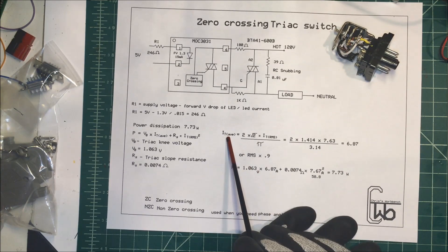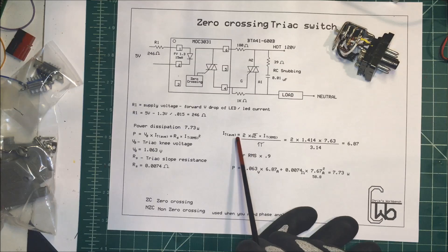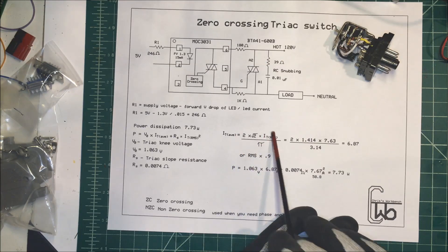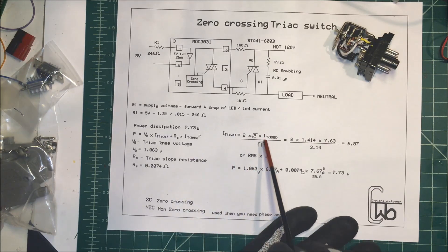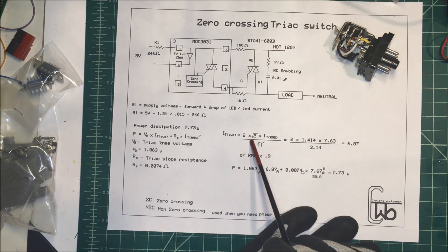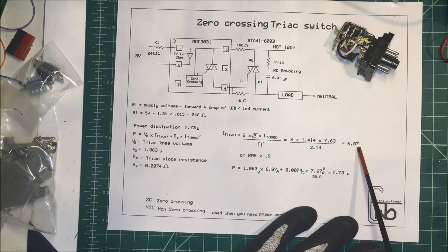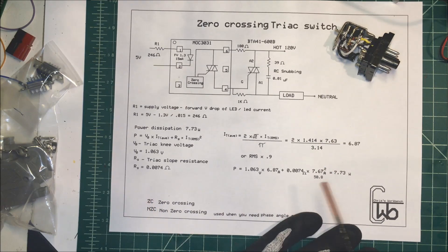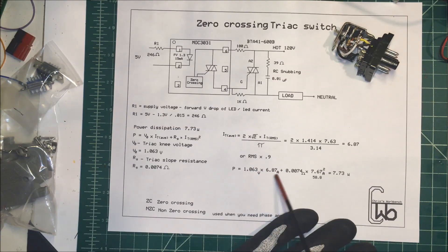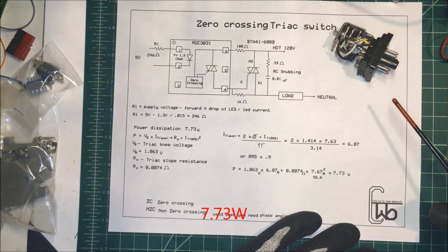To get your average current, we take two times the square root of two times your RMS value divided by pi. That's how you would do that, but if we don't want to do all that we can just multiply it by 0.9. So if you do this, the average current comes up to 6.87, and my RMS value was 7.63. So now I plugged everything in here to find my wattage and it came out to 7.37 watts. So this thing's dissipating almost 8 watts.